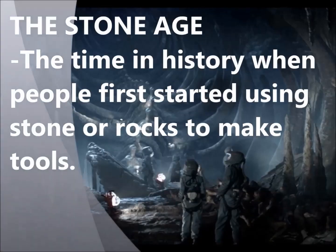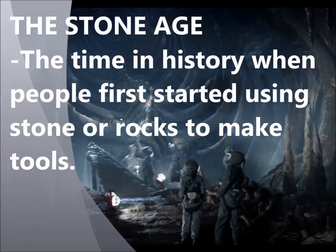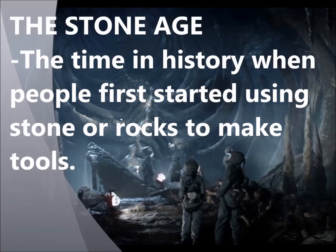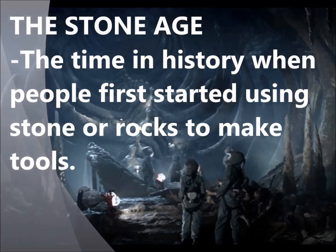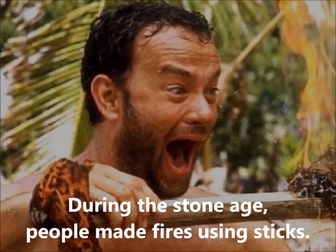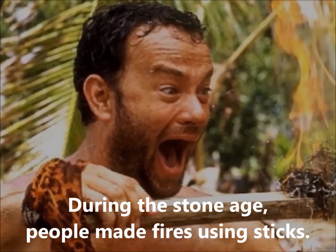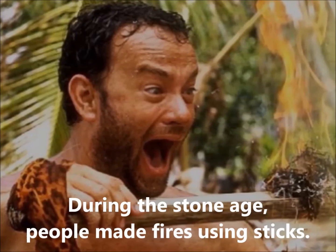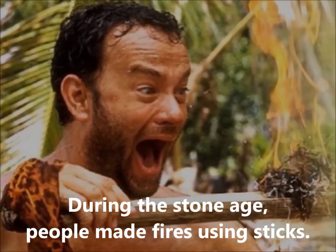The Stone Age: a time in history when people first started using stone, or rocks, to make tools. For example: During the Stone Age, people made fires using sticks.